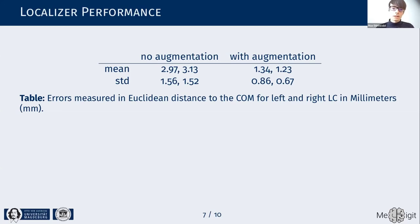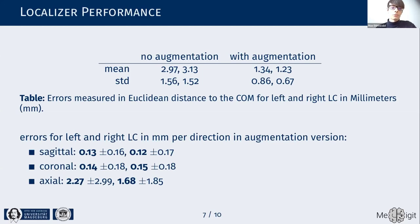However, when we analyzed the error with respect to individual dimensions, we found that most of this error comes from the slicing direction — the axis along which the LC extends. Its length in this dimension is 12 to 17 millimeters, while in the other dimensions it's only 1 to 2 millimeters. This indicates we actually have quite reliable localization quality.